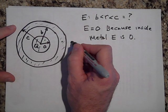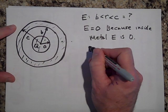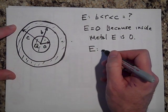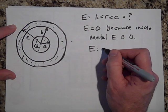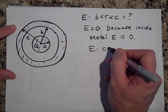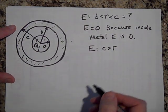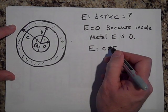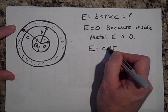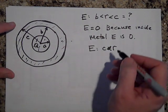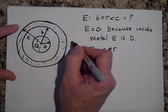And then, how about outside? What about E when you're at R is greater than C. R is greater than C. Excuse me. So out here.